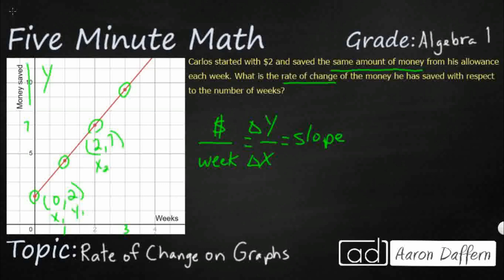I can choose two other points if I want to. So we know how to do this. This is y2 minus y1 over x sub 2 minus x sub 1. I'm looking for the change in y over the change in x. So that's going to be 7 minus 2, and then 2 minus 0. So what I'm going to get is 5 halves or 2.5.